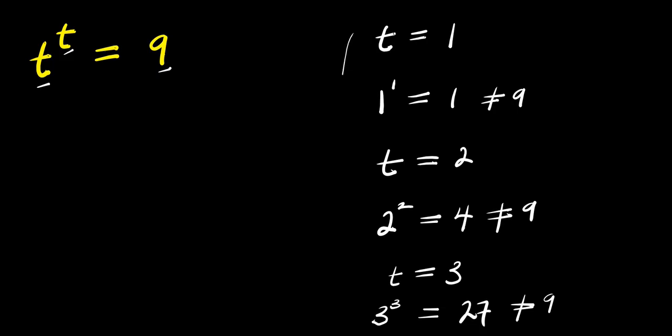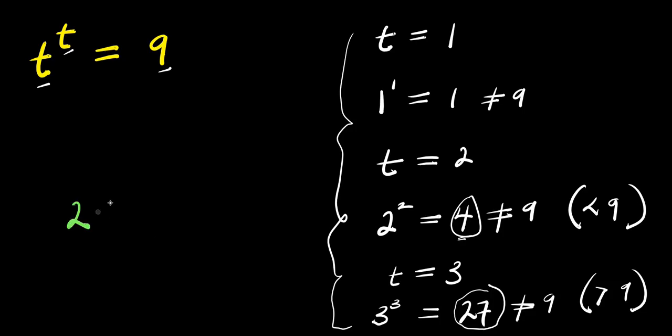So amongst all these values what we can easily derive is that when t equals 2 we have 4, and this 4 here is less than 9. And when t equals 3 we have 27, and the 27 is greater than 9. So we can actually gain the range of values for t which is 2 less than t and t less than 3. So this becomes the range of values of t that will satisfy this equation.